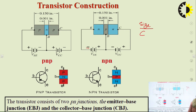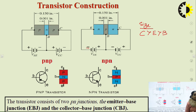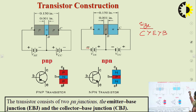The collector occupies the maximum area, followed by the emitter, and the base is the thinnest. The reason the collector has the maximum size is that electrons ejected from the emitter — in the case of NPN — have to be collected at the collector. There must be a larger area for collection of electrons. The base is the central region through which majority charge carriers pass, so it is thinnest in geometry.